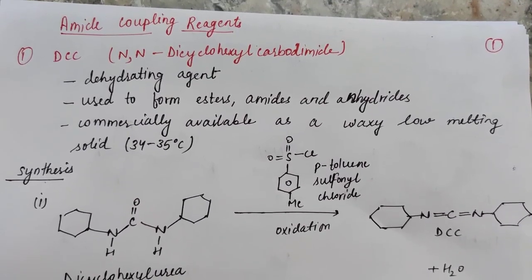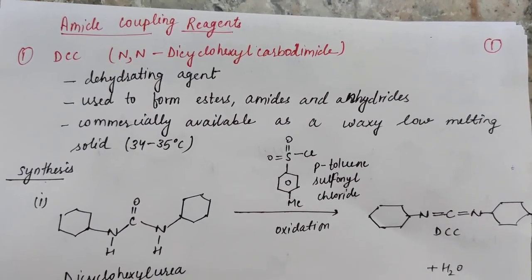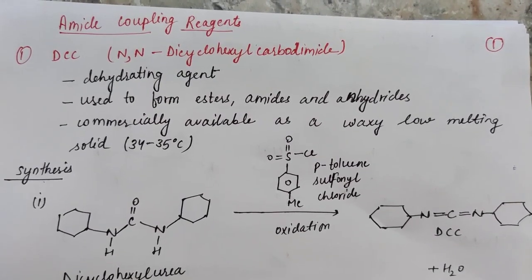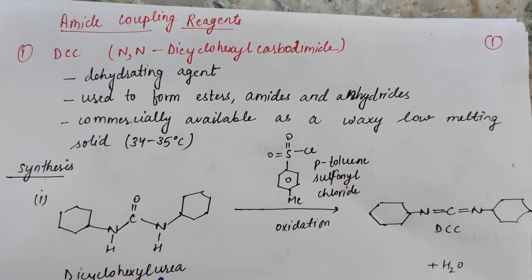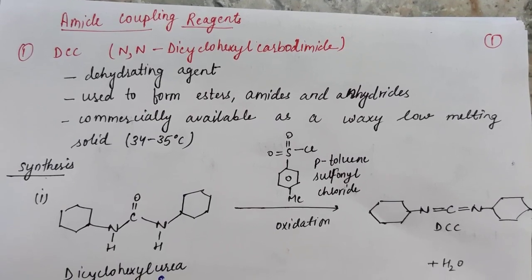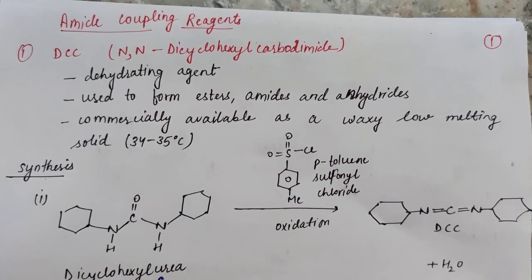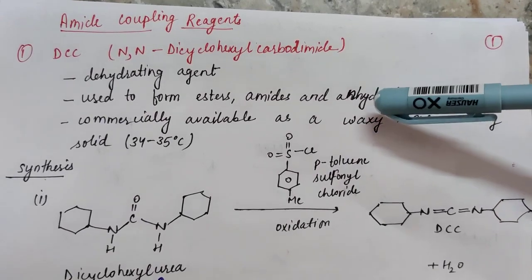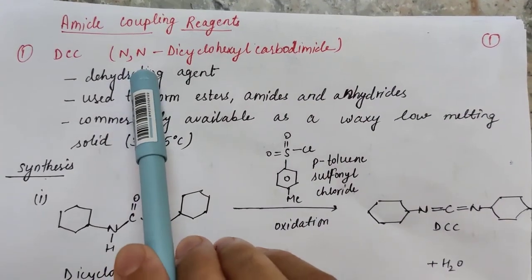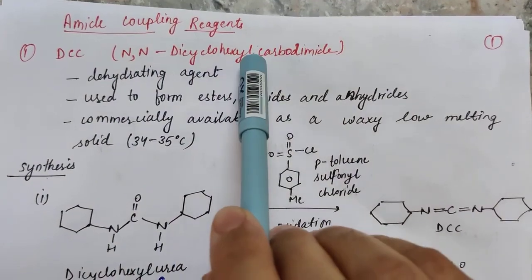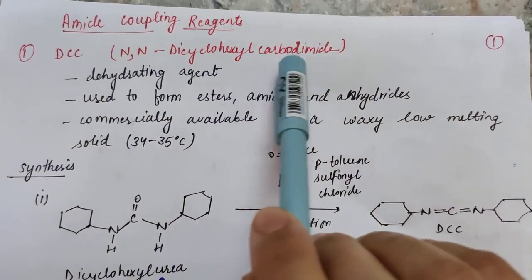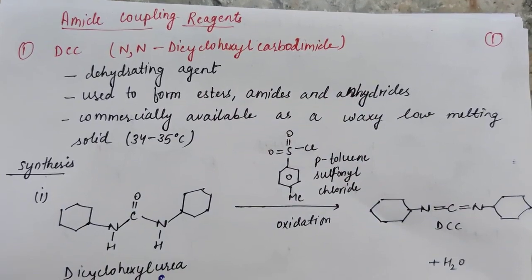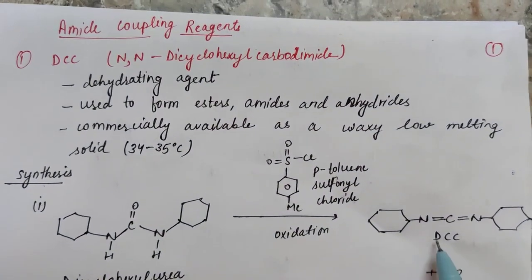The various amide coupling reagents we are going to study today are DCC, EDCI, HATU, and BOP. Let's start with our first reagent, DCC, which stands for N,N-dicyclohexylcarbodiimide. This is its structure.